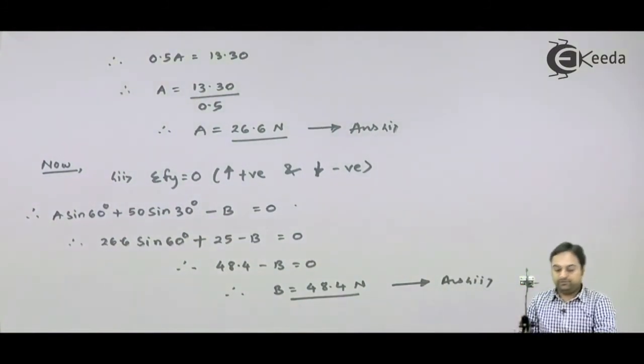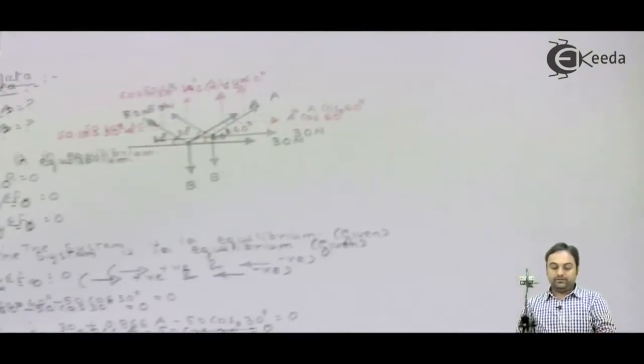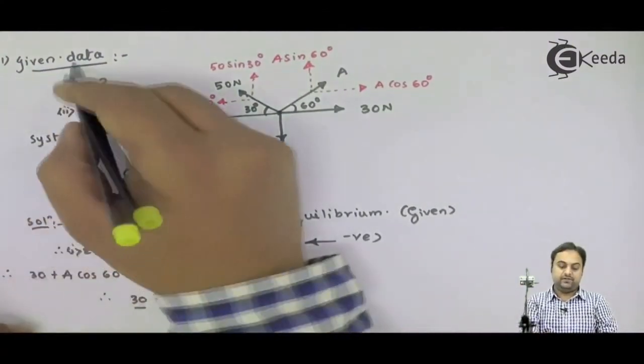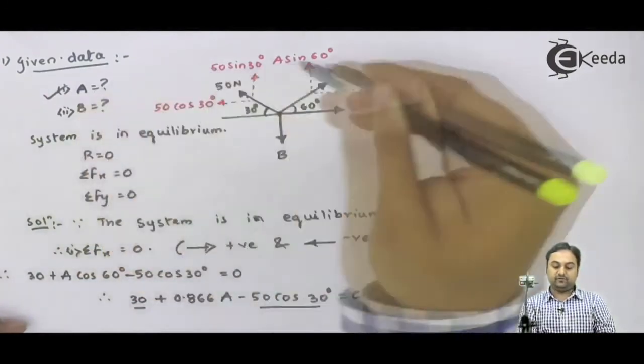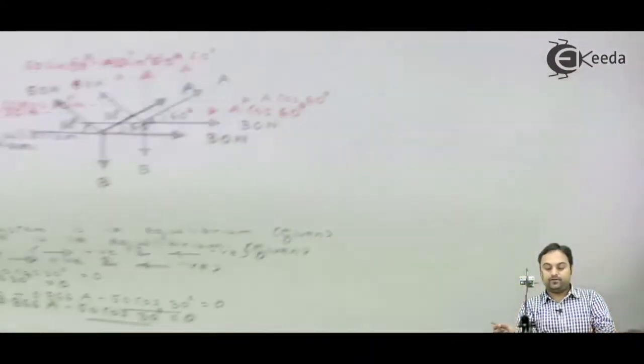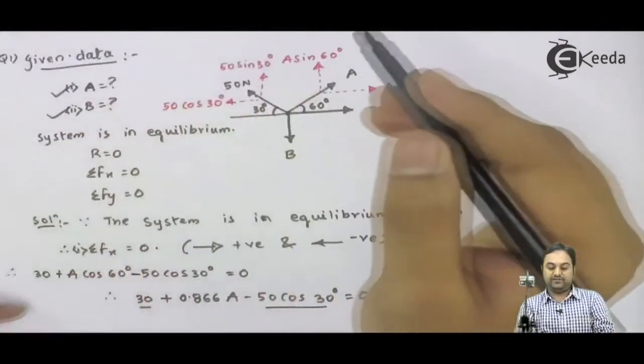So if we look into this question, there were two things asked - value of force A and force B. Force A we have found out, it is 26.6 Newton. Force B we have calculated, it is 48.4 Newton.